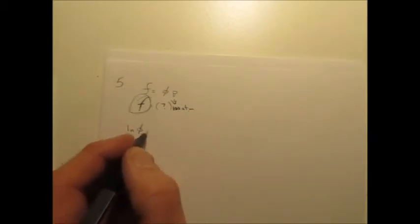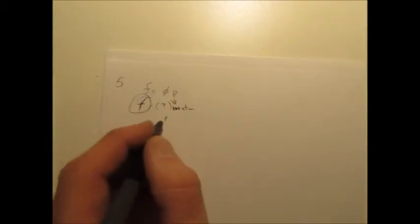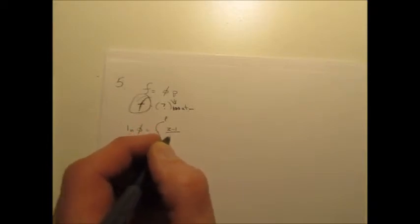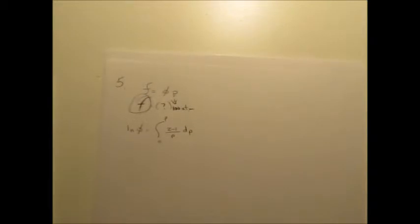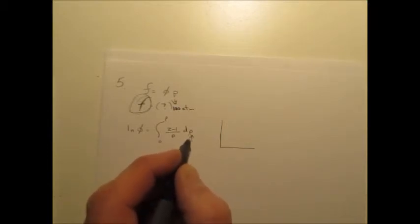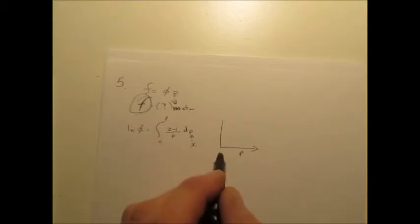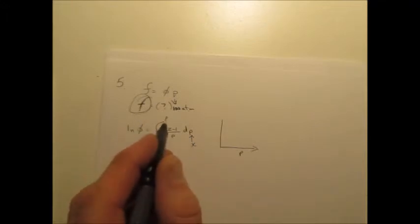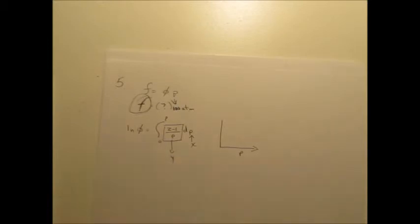The ln of the fugacity coefficient: integrate from zero up to the pressure you're at. This is the equation we have. We both know that on a graph, this dx position is your x-axis. So you would have to graph, and what's between the integral and the dP term, this is your y-axis.